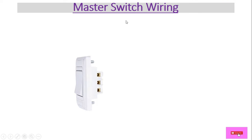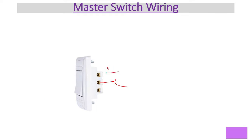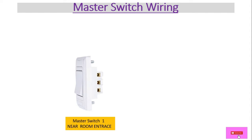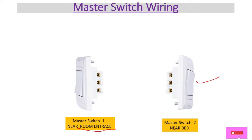We are going to start the wiring of the master switch. Generally we use two master switches in a room. We have a two-way switch, which has a common point and two contacts — so three terminals in total. We've placed one master switch near the room entrance and another near the bed, by the bedside table.